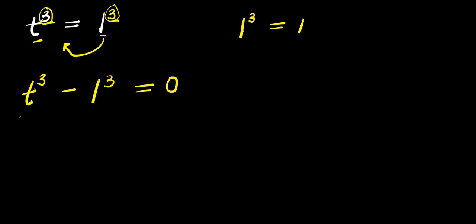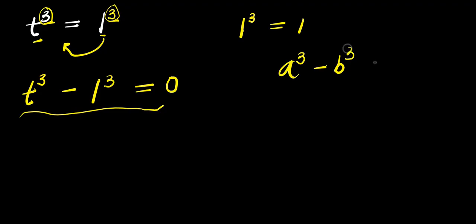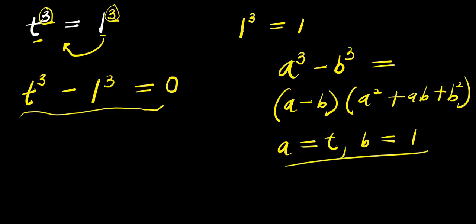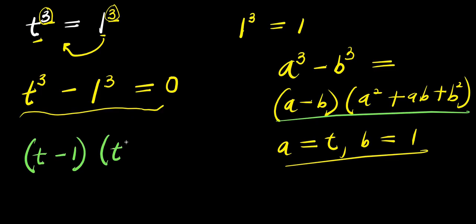Now we are going to expand this, and to achieve that we apply this identity: if you have a to the power of 3 minus b to the power of 3, this equals (a minus b) times (a squared plus a times b plus b squared). In this case our a is t, while our b is 1. So let's apply this identity — we are going to have (t minus 1) times (t squared plus t times 1 plus 1 squared), and this equals 0.